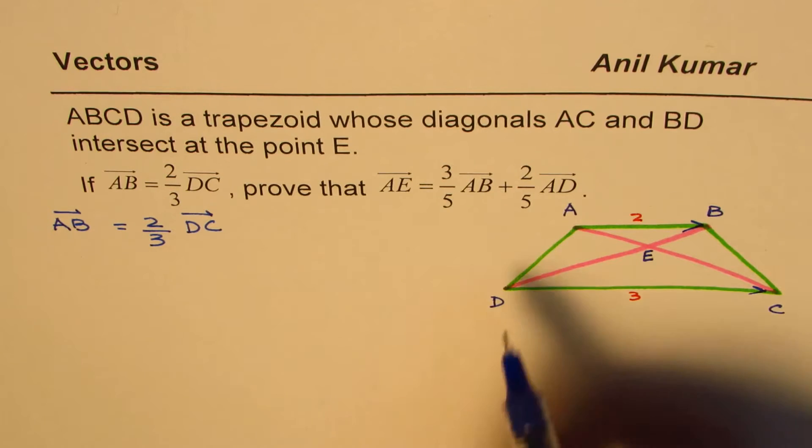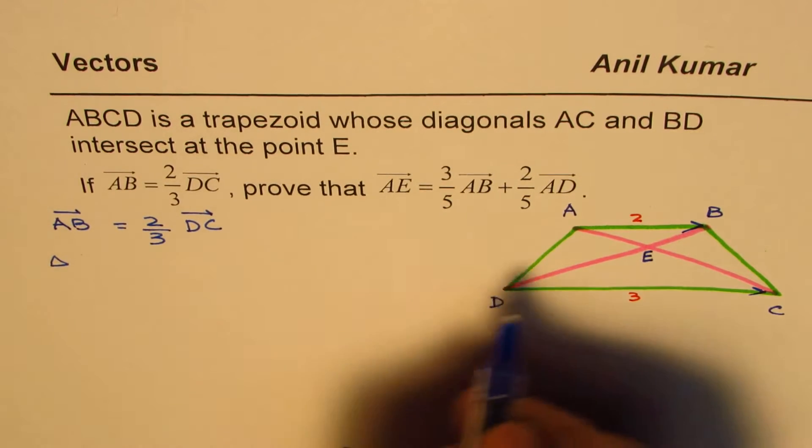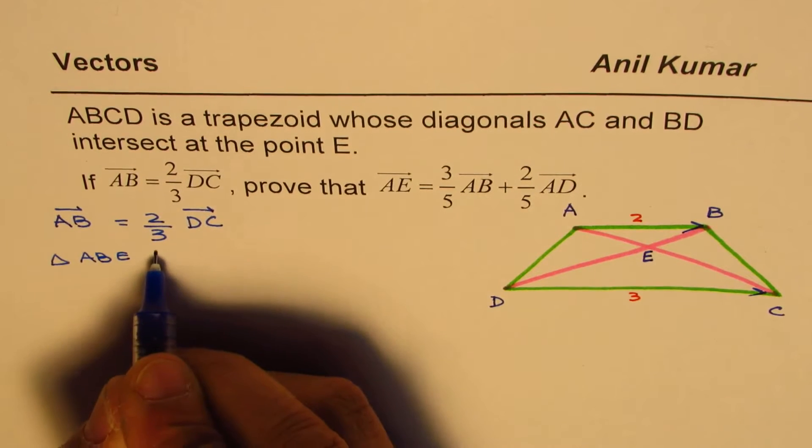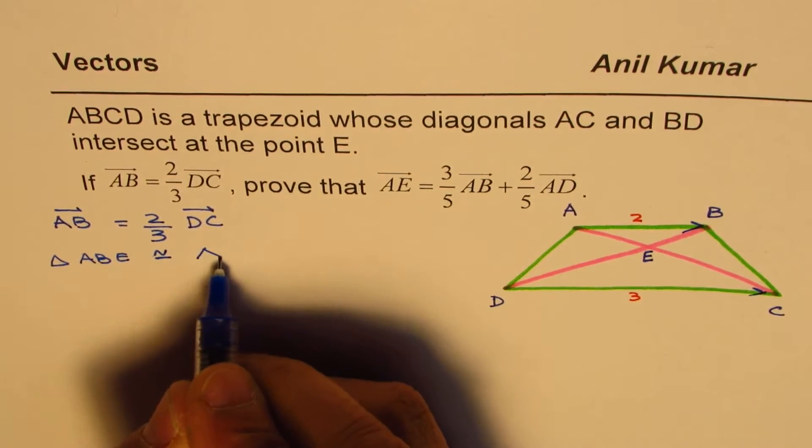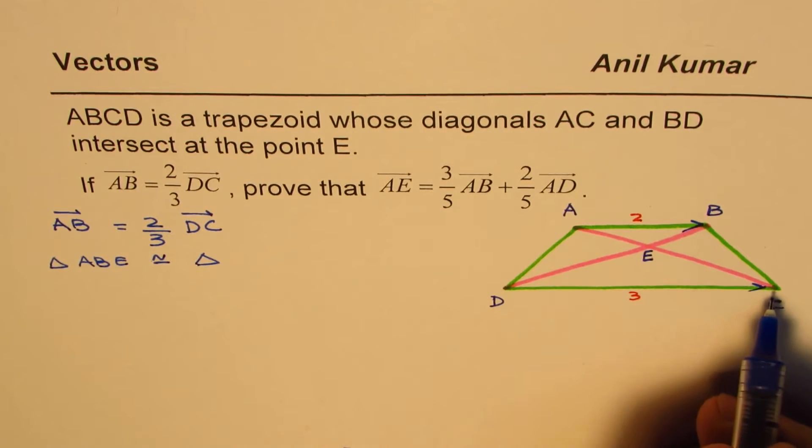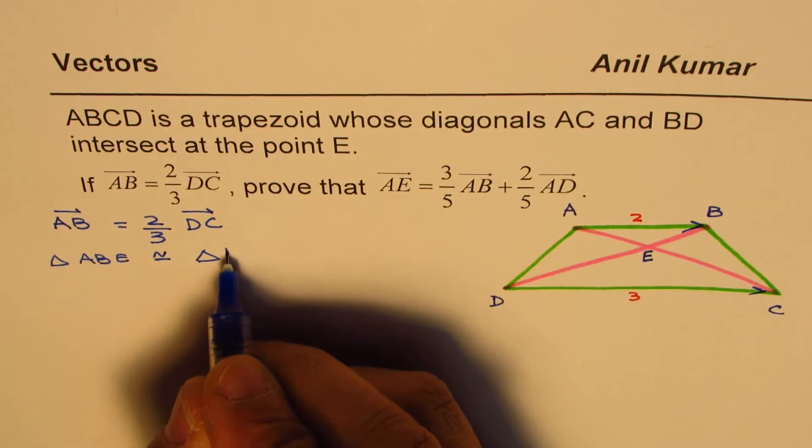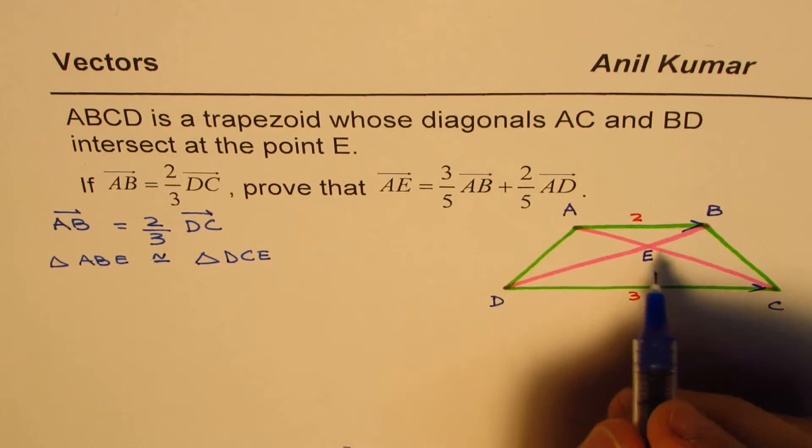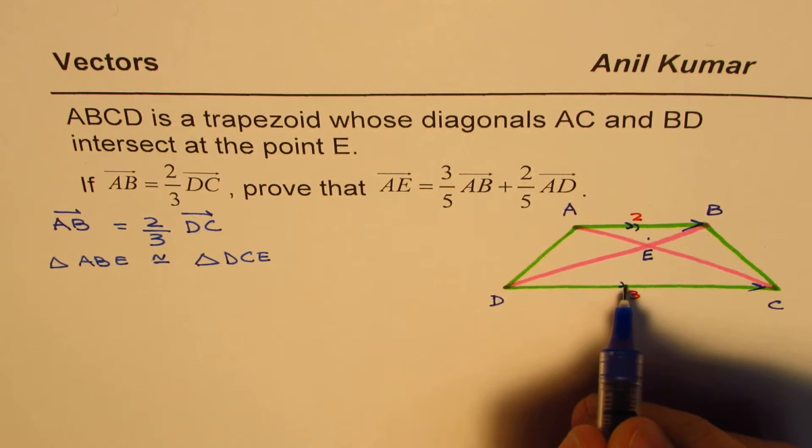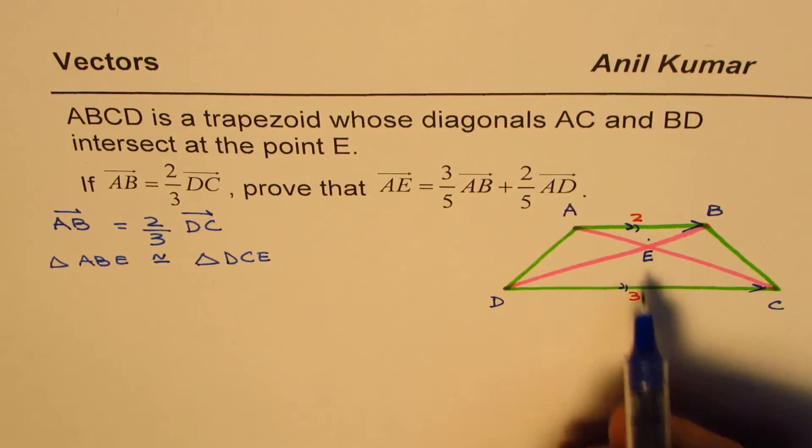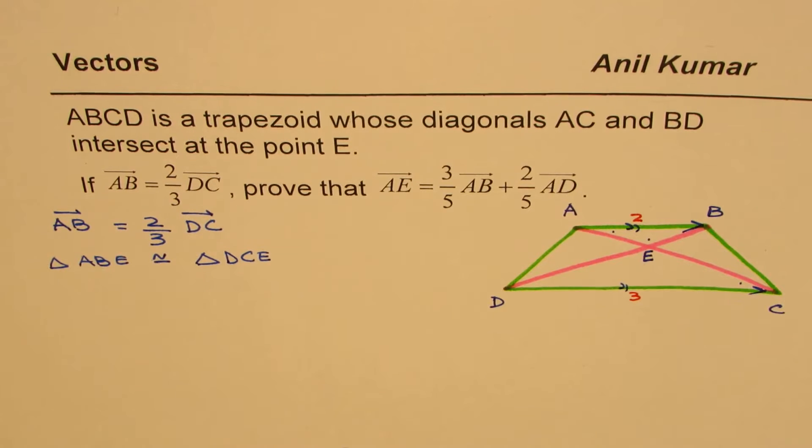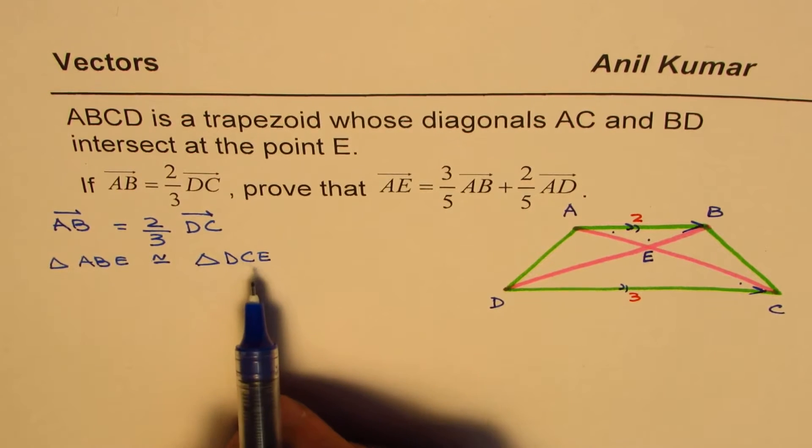Now if you observe, we have two similar triangles. We know that triangle ABE is similar to triangle DCE. These two triangles are similar. They have opposite angles which are same, parallel lines. These are parallel lines since they are in fixed ratio. So these angles are also same, congruent angles. So from AA, they are similar.